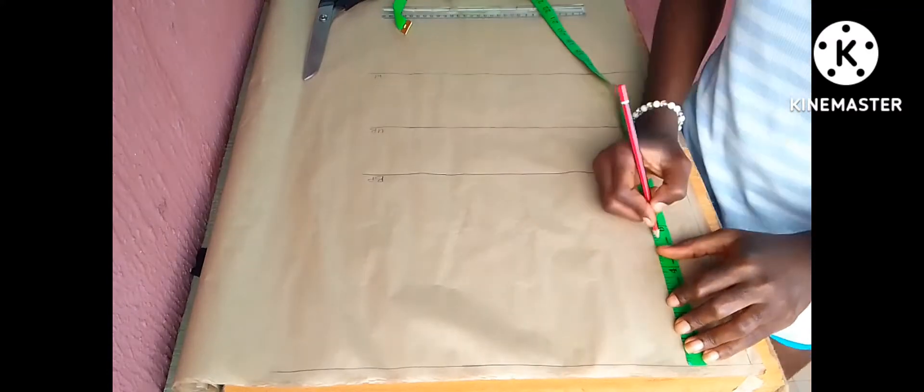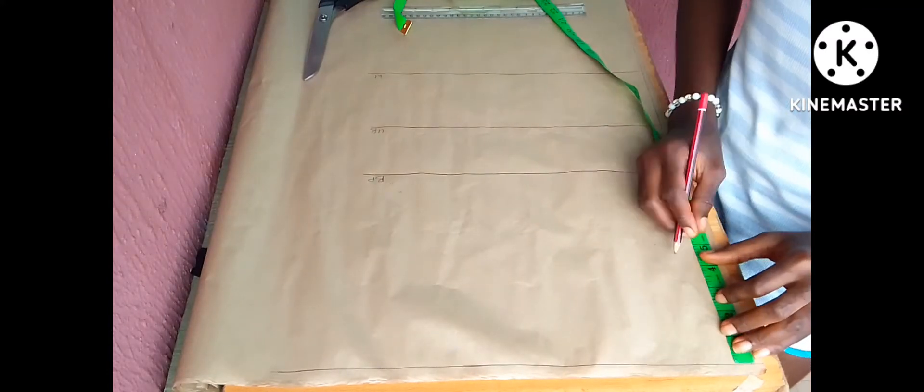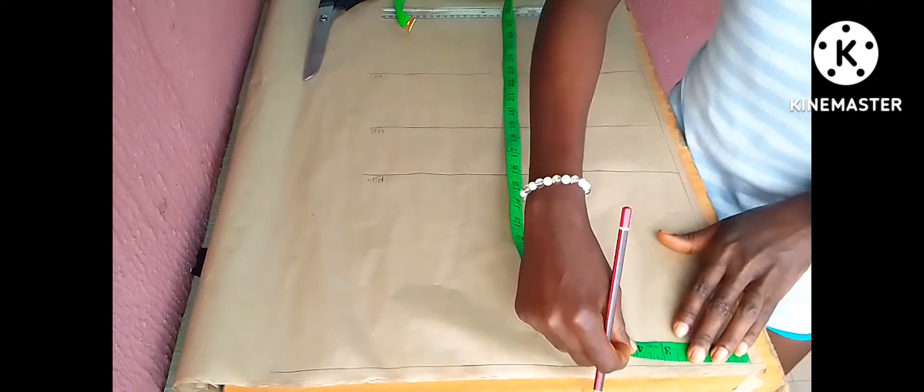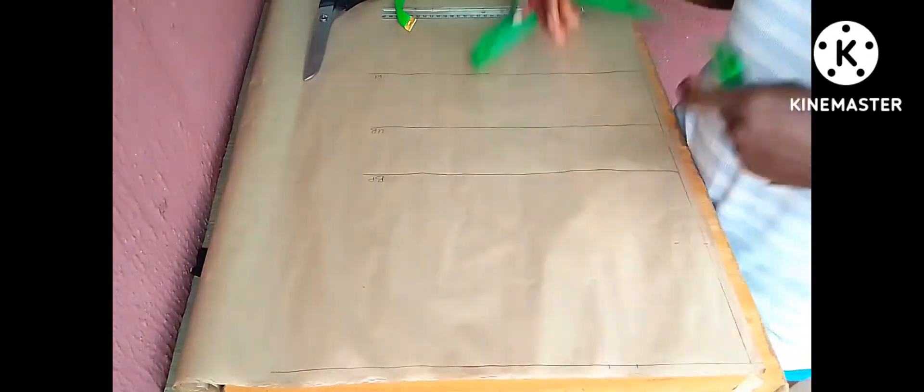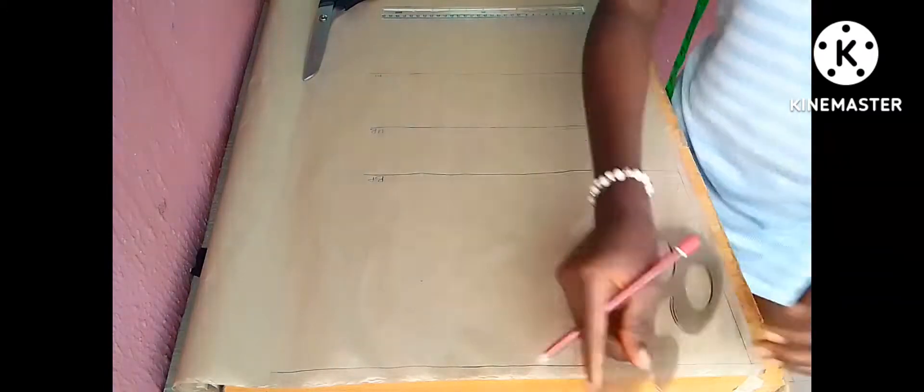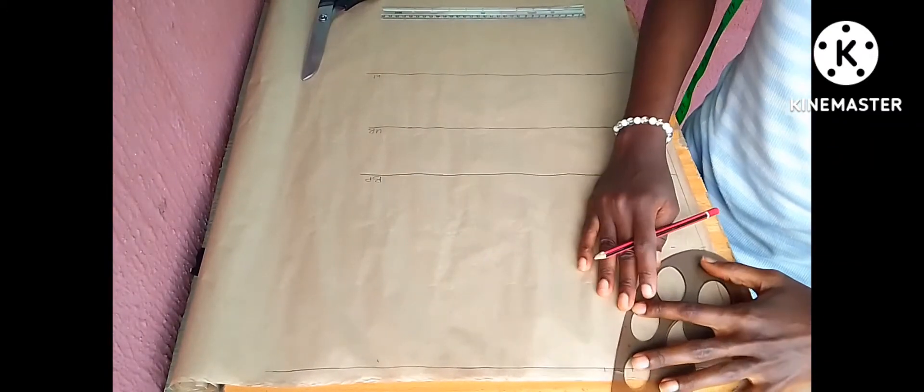So here is what I'm doing. Now the next thing I want to do is to mark out my neck depth and my neck width. So I'm using 5 inches by 5 inches. I don't really want it too choking. So I just need something free and down a bit.